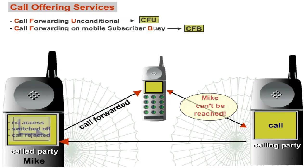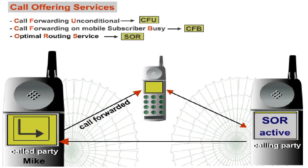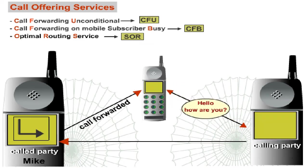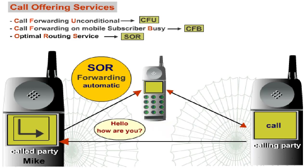Supported by the Optimal Routing Service, SOR, a GSM Phase 2 Plus feature, calls are routed directly to the subscriber's current location. This service is based on the information provided by the calling subscriber's home network. As an option, the network may permit or deny SOR on a per-call basis. SOR has not yet been implemented.